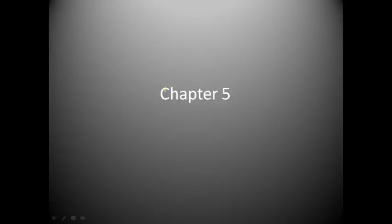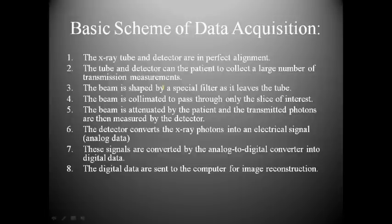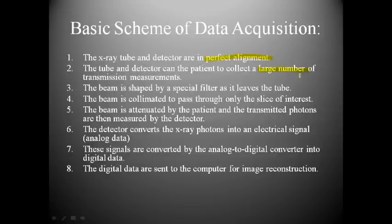Today we're going to be talking about Chapter 5, which covers basically what allows us to gain images for computer tomography. First, we're looking at the basic scheme of data acquisition. The X-ray tube and the detectors have to be in perfect alignment — any variation will lead to increased patient dosage without any noticeable gain in images. The tube and detectors scan the patient to collect a large number of transmission measurements.